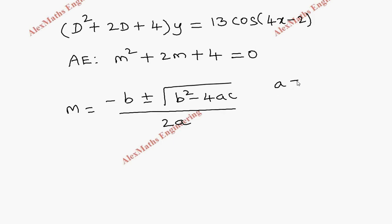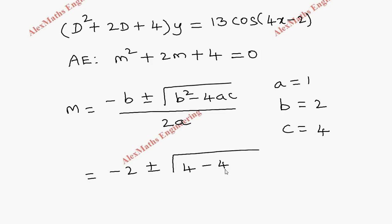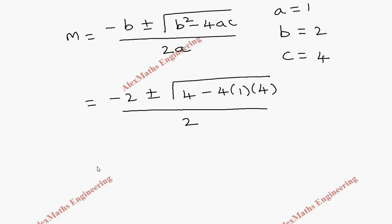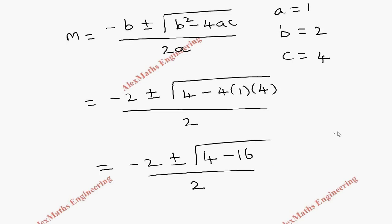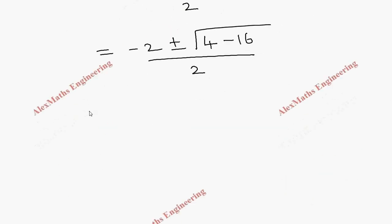The value of a is 1, b is 2, and c is 4. By substituting, we get m = (−2 ± √(b² − 4ac)) / 2a, which is 2×1. So m = (−2 ± √(4 − 16)) / 2, and inside the root we get −12.